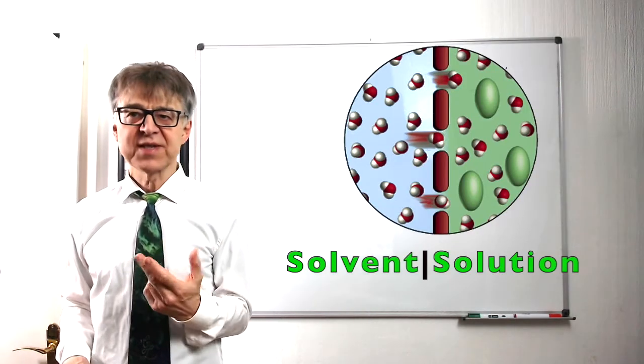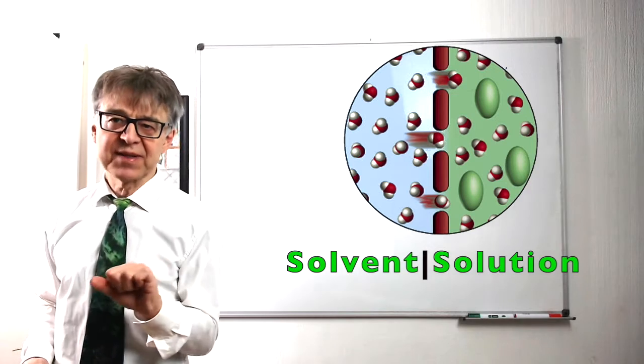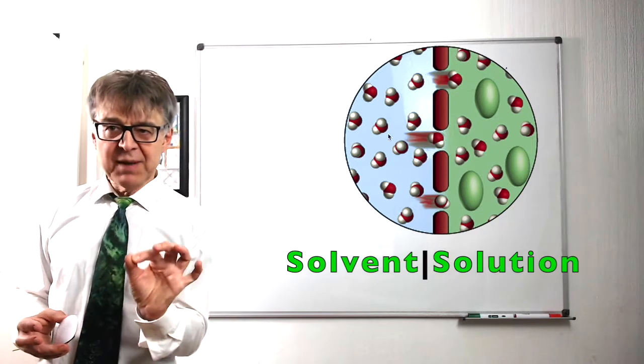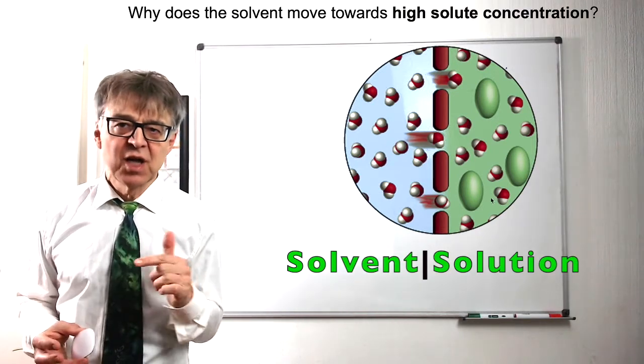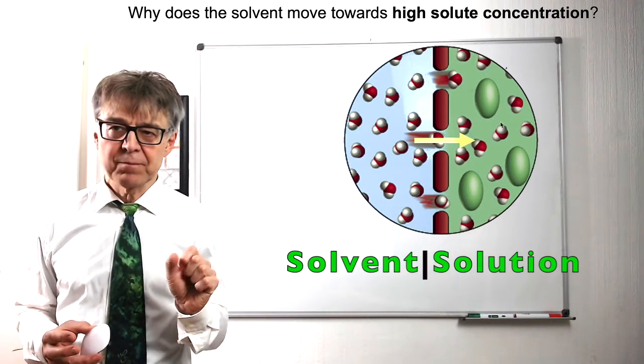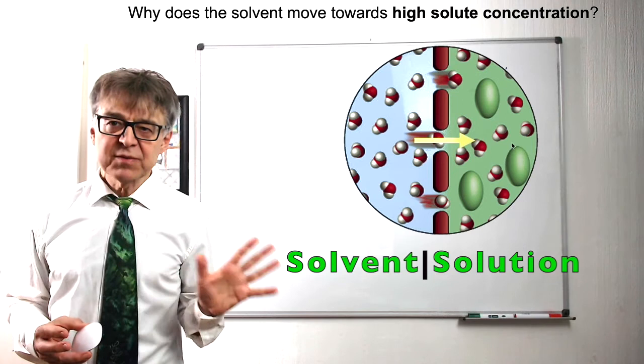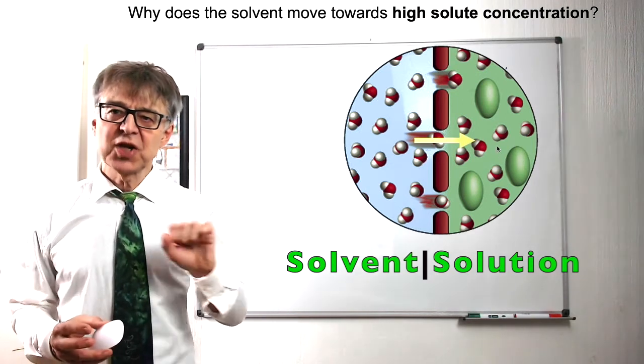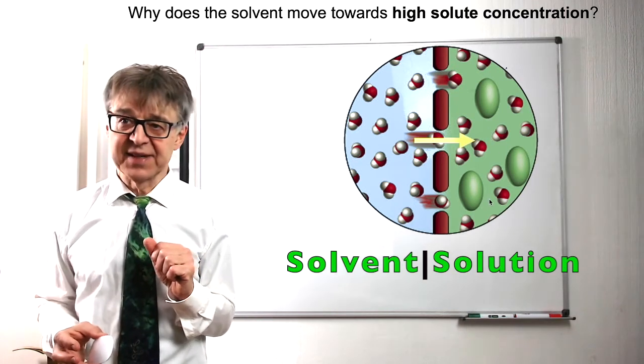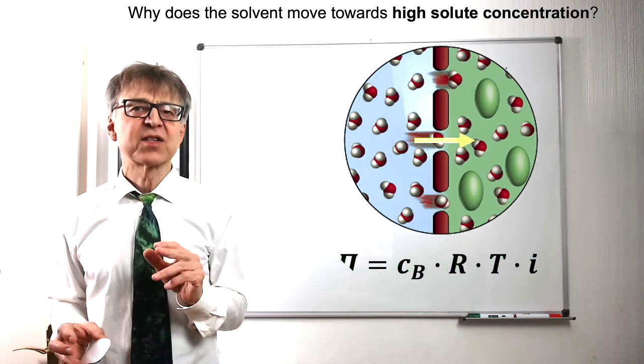The solution always has a lower vapor pressure than the solvent, which means that the solution is more stable than the solvent. If we separate the solution and the solvent by a semipermeable membrane, then solvent molecules will voluntarily move into the more concentrated solution. This will create an additional pressure in this solution. This transport process continues until the pressure in the solution has become so high that the stability in both phases is identical again.